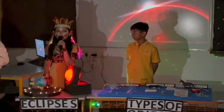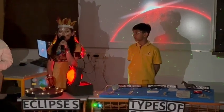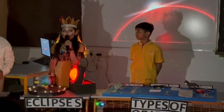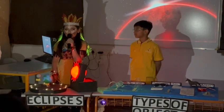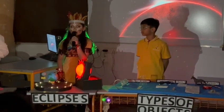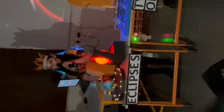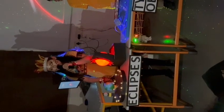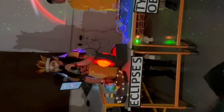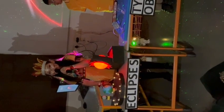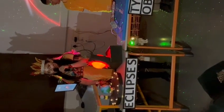Lunar eclipse. When the earth comes directly in between the moon and the sun, this shadow falls on the moon. As a result, we cannot see a part of the moon. This is called a lunar eclipse.